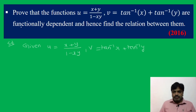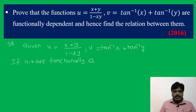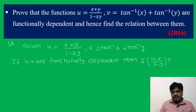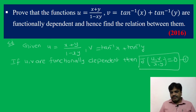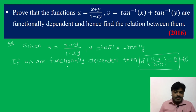Now, what we prove here is functional dependence. If u and v are functionally dependent, then the condition is J(u,v)/(x,y) = 0. Take the LHS, J(u,v)/(x,y), apply the Jacobian definition, expand the determinant — the value must equal 0. Then only we can say that u and v are functionally dependent.